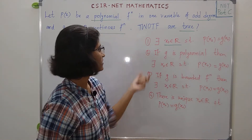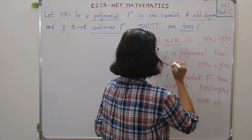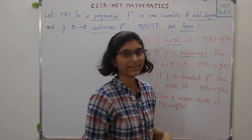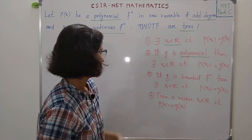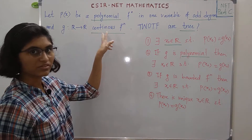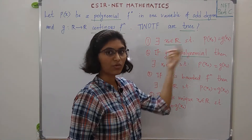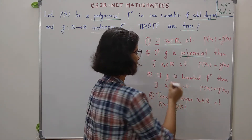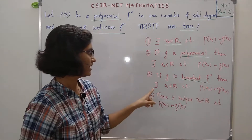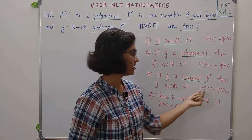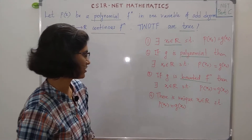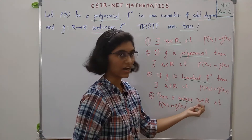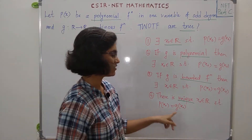The second option is: if G is a polynomial, then there exists X₀ belonging to R such that P(X₀) is equal to G(X₀). Now we have given this function is continuous, but this option asks if G is specifically a polynomial. The third option is: if G is a bounded function, then there exists X₀ in R such that P(X₀) equals G(X₀). The last option says there is a unique X₀ in R such that P(X₀) equals G(X₀).